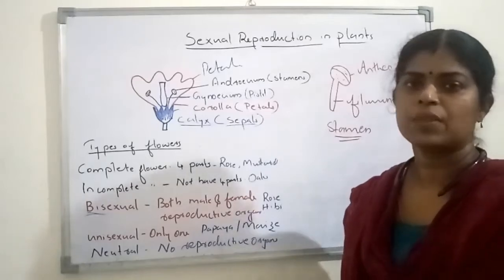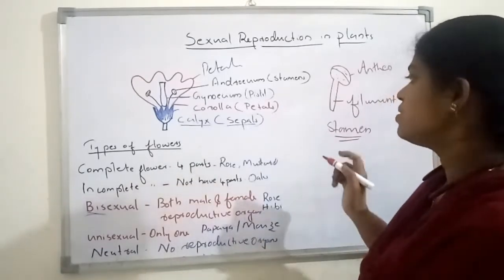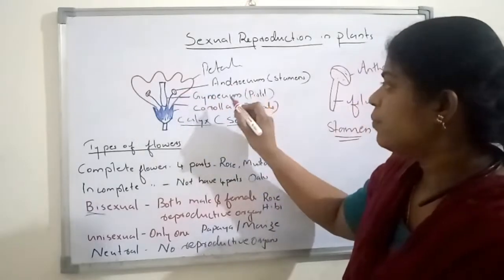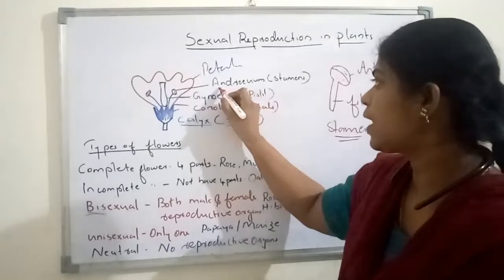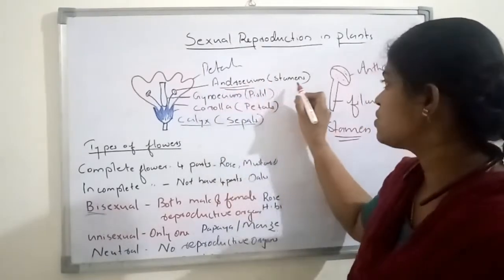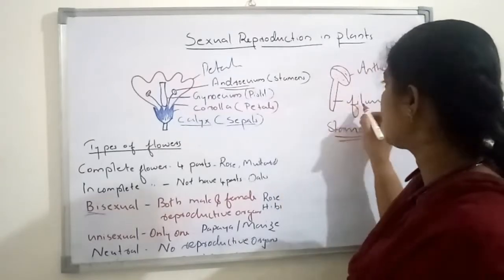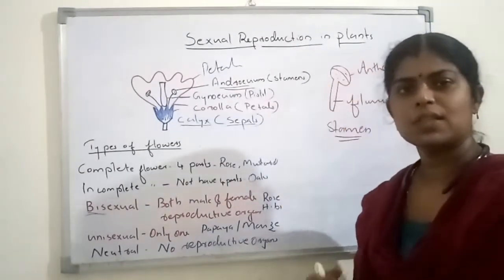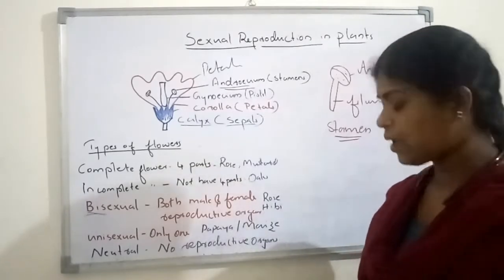The pollen grains contain the male gametes. So within the flower, inner to the corolla, the main reproductive part will be there — that is known as the androecium. Androecium is made with stamens. Stamens have two parts: the filament and the anther, and the anther produces the pollen grains. Pollen grains contain the male gametes.